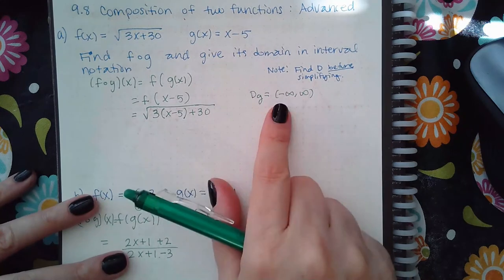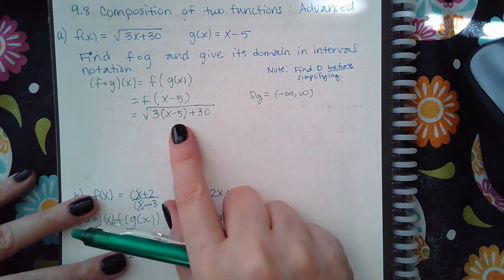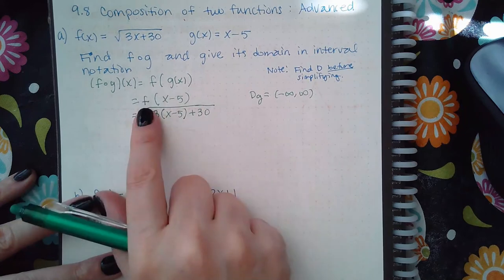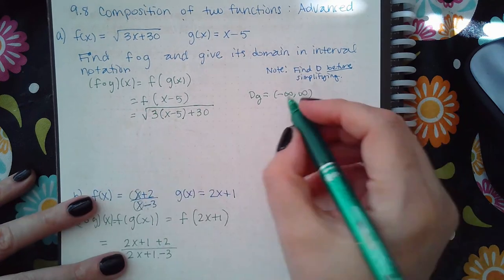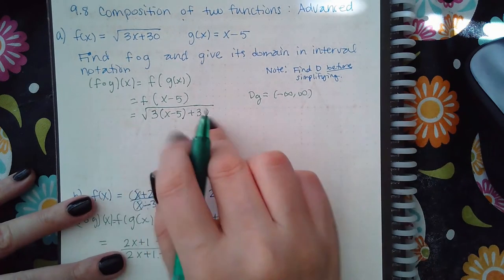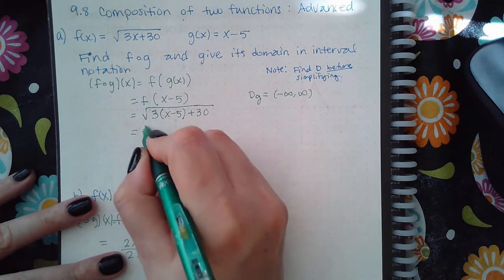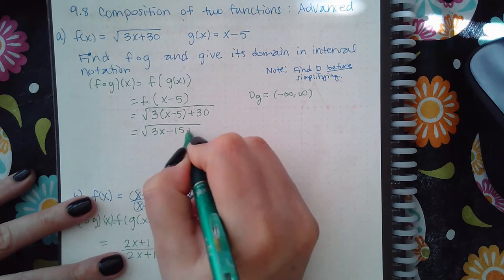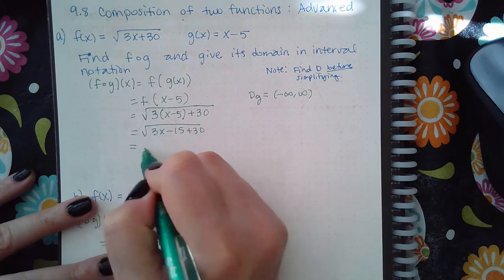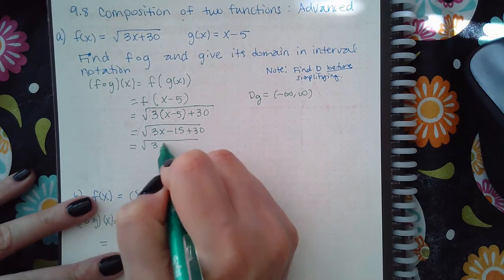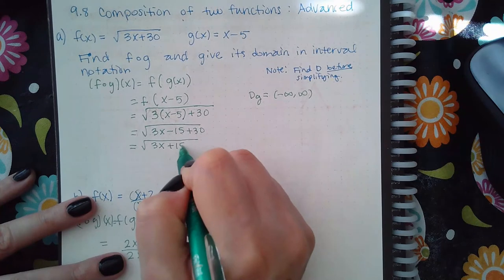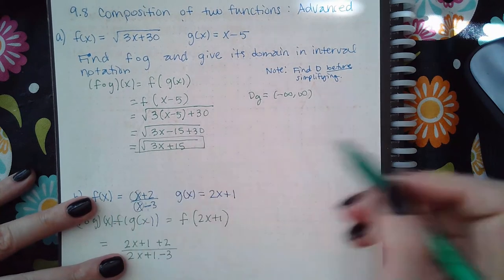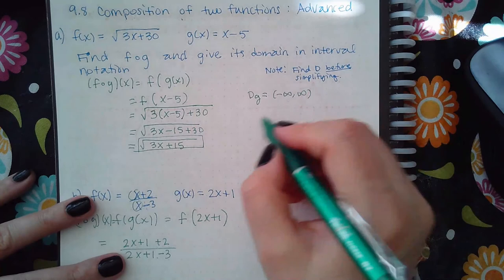What our job is to do is to figure out if there are any of these values that don't work. So once I plug this in, what I'm going to do is I'm going to look at the domain of this. Now if I simplify that I end up with 3x minus 15 plus 30, and I get 3x plus 15. And so this is what they're going to want for f of g.